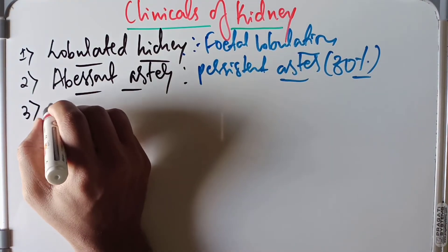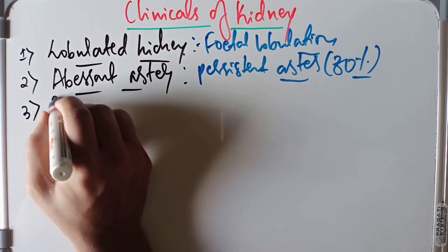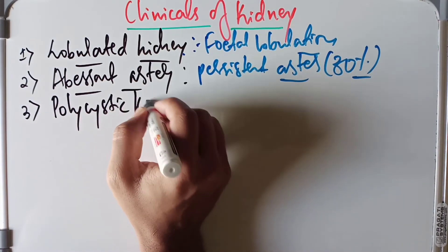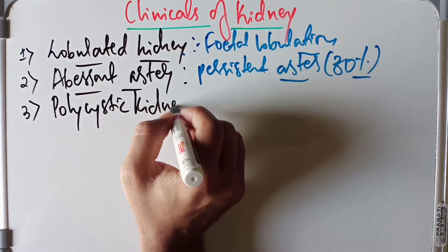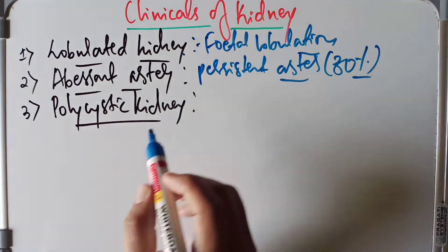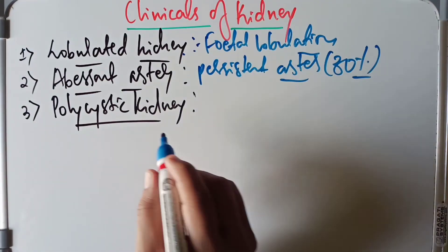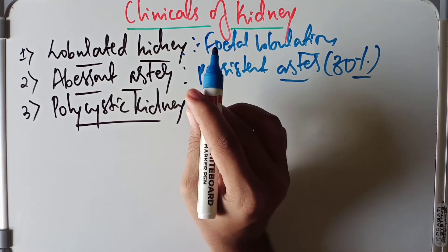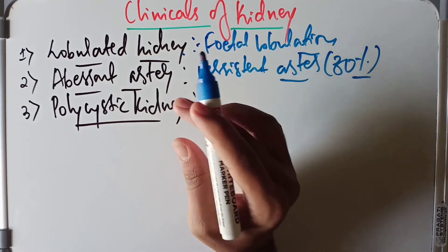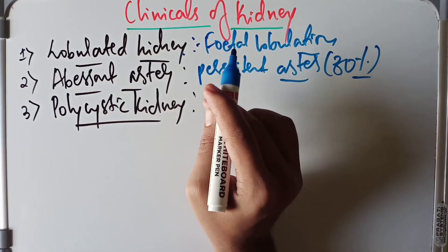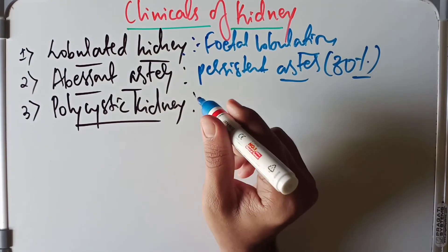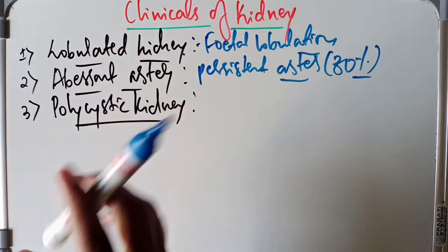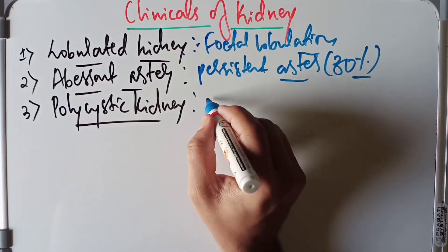The next thing is the congenital polycystic kidney, which is very important. It is formed when the luminal continuity between the nephrons and the collecting tubules fails to establish. Basically, we have the ureteric bud, and around the ureteric bud we form the metanephros or metanephric cap.